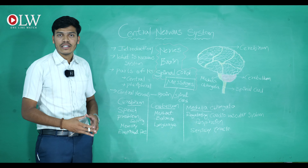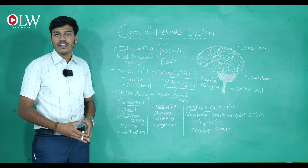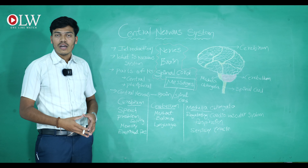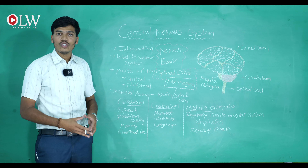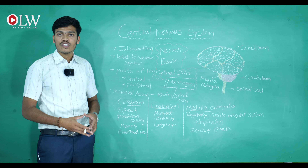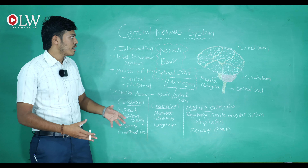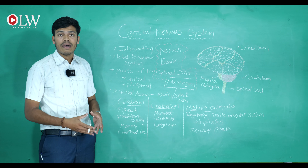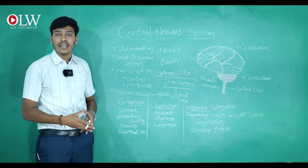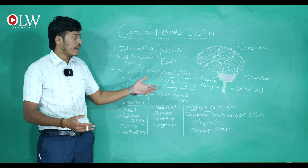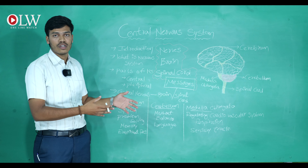Hello everyone, welcome. I'm Saptagiri. Based on content from the previous class, today we are going to learn about the central nervous system. We already know what an organ and organ system are — two or three parts combined together working for a specific function. Today we'll cover the central nervous system, its parts, nerves, types of nerves, the brain, and the functions and parts of the brain.